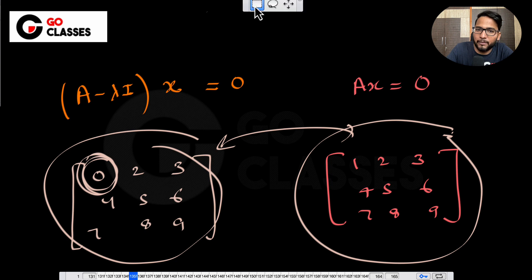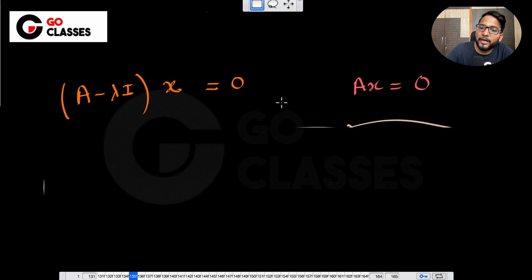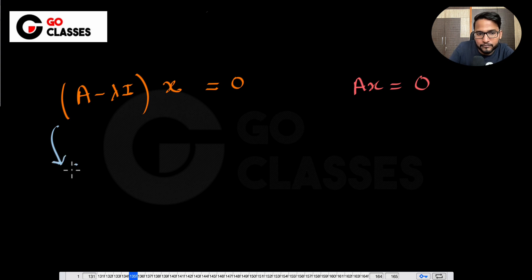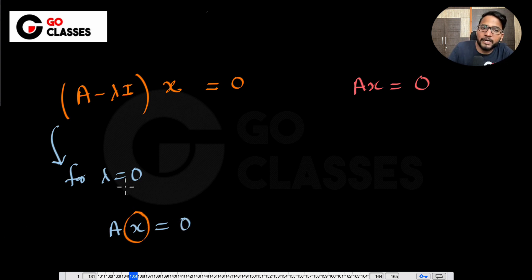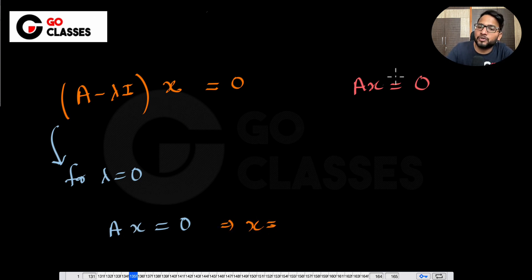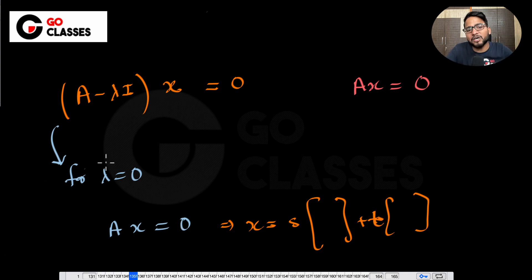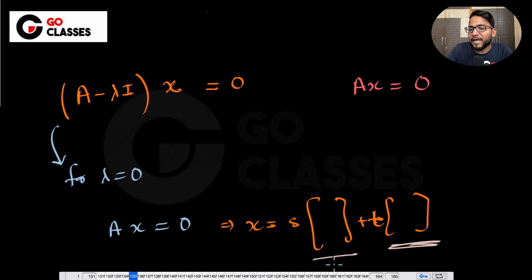The good thing is that if λ = 0, then both equations are the same. If you put λ = 0 in (A - λI)x = 0, it becomes just Ax = 0. So the eigenvector you get is simply the solution x of Ax = 0. Suppose you get the solution with two linearly independent vectors, which means you have two linearly independent eigenvectors corresponding to λ = 0.